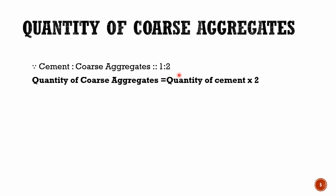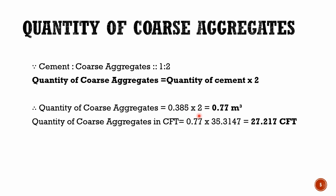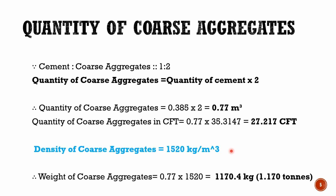Since cement and coarse aggregate are in the ratio of 1:2, the quantity of coarse aggregate is equal to quantity of cement multiplied by 2. Therefore, quantity of coarse aggregate equals to 0.385 multiplied by 2, which equals 0.77 cubic meter. Quantity of coarse aggregate in CFT equals to 0.77 multiplied by 35.3147, which equals 27.217 cubic feet. Density of coarse aggregate is 1520 kg per cubic meter. Therefore, weight of coarse aggregate equals to 0.77 multiplied by 1520, which equals 1170.4 kg, or 1.170 tons.